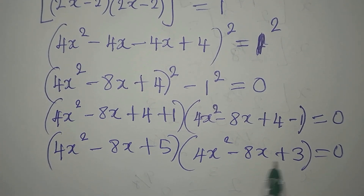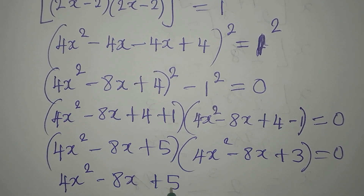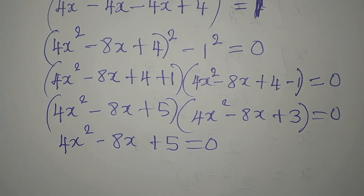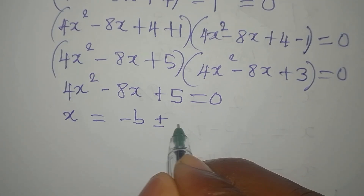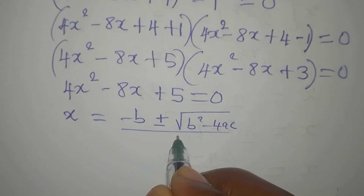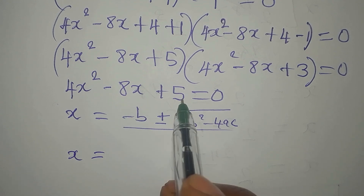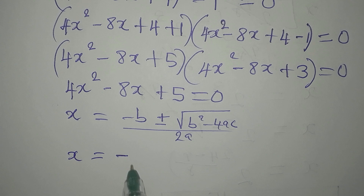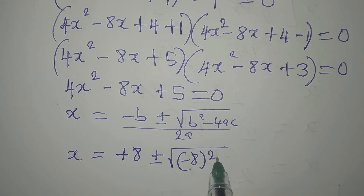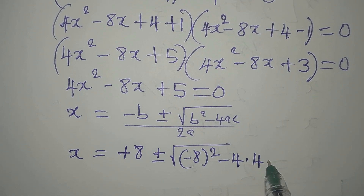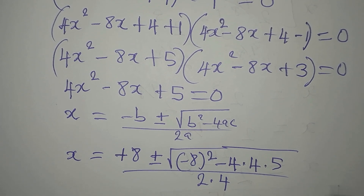We pick the two factors one after the other and equate to zero. First: 4x squared minus 8x plus 5 equals zero — this is a quadratic equation. We use the quadratic formula: x equals minus b plus or minus square root of b squared minus 4ac, all over 2a. Here a is 4, b is minus 8, and c is 5. So minus b gives us plus 8, and we have 8 squared minus 4 times 4 times 5, divided by 2 times 4.